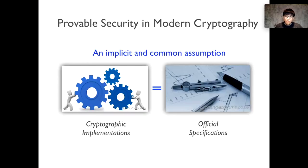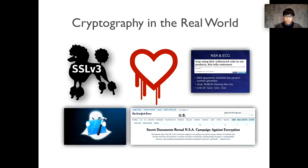Modern cryptography has been a tremendous success, partially due to the provable security technique. Note that the robustness of provable security closely relies on an implicit common assumption: that the implemented cryptography algorithms in reality should behave in a way specified by their specifications. Unfortunately, in the real world, such an assumption may turn out to be invalid due to a variety of reasons such as software or hardware bugs and even malicious tampering attacks.